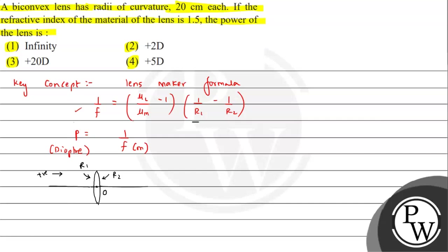So r1 will be lying somewhere over here. It will be towards this side, so it will be taken as positive. If we talk about r2, this surface's measurement will be in this direction, so r2 will be taken as negative. Now mu_l is the refractive index of lens, mu_m is refractive index of medium. Here the medium is air, so we are considering refractive index of air to be 1.